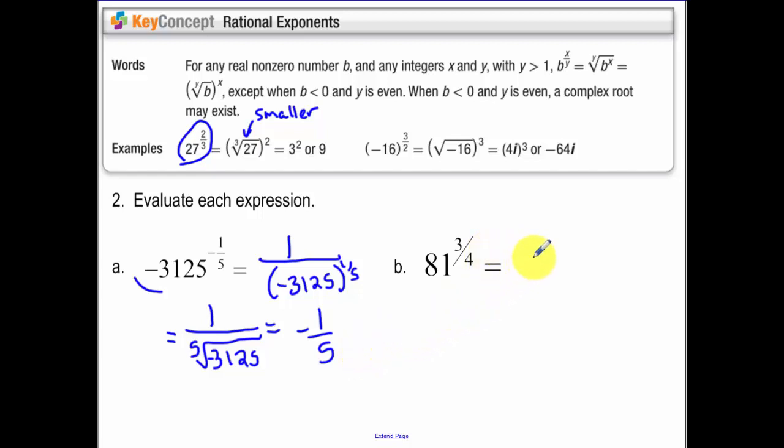Now for 81 to the 3/4 power, do the 4th root of 81 first because that's going to make that a smaller number, then we're going to cube it. So the 4th root of 81, four of the same things that multiply to be 81, is 3 cubed, which equals 27.